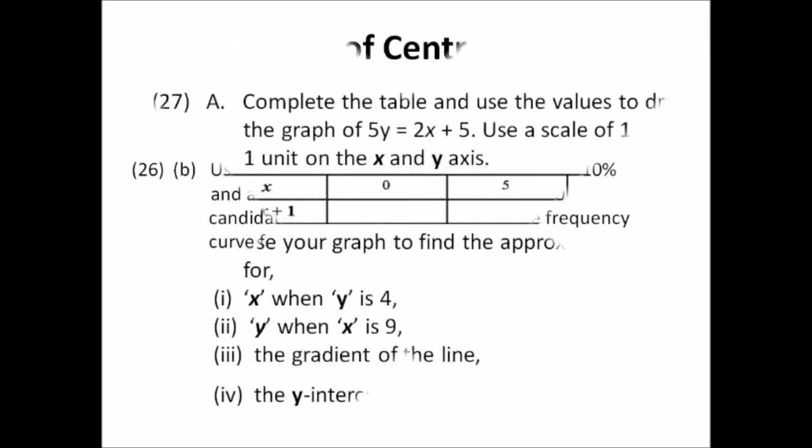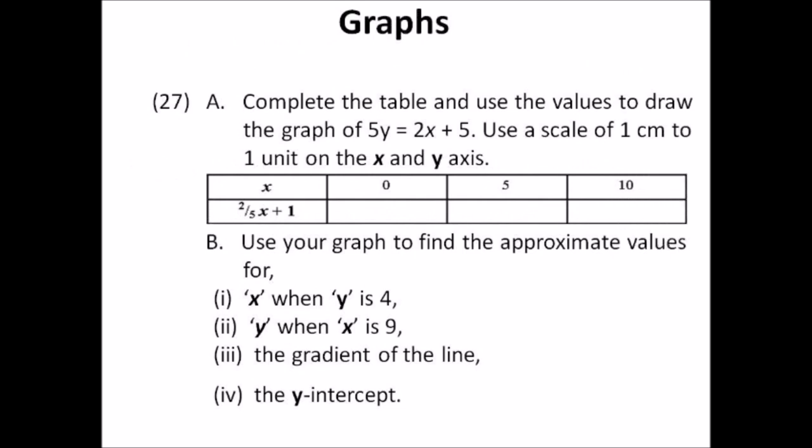Number twenty-seven: graphs. Complete the table and use the values to draw the graph of 5y equals 2x plus 5, using a scale of 1 centimeter to 1 unit on both axes. The x values are 0, 5, and 10. This simplifies to y equals two-fifths x plus 1. Then use your graph to find approximate values for x when y is 4, y when x is 9, the gradient of the line, and the y-intercept.